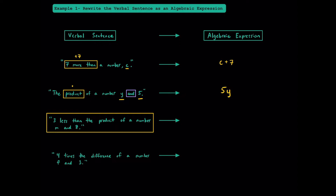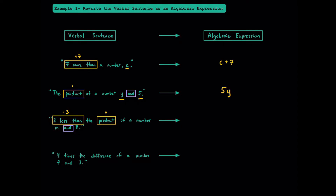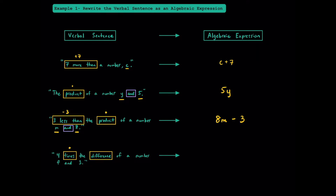Here we have: 3 less than the product of a number M and 8. '3 less than' means we're going to be subtracting 3 from something, and product means we're multiplying. Looking for the word AND, we're multiplying M and 8 together, so we write 8M — number first, no multiplication symbol — and then subtract 3 to get 8M minus 3. Finally: 4 times the difference of a number F and 3. Times means multiplying and difference means subtracting. We write F minus 3, then put parentheses around it and write 4 in front, giving us 4(F minus 3).